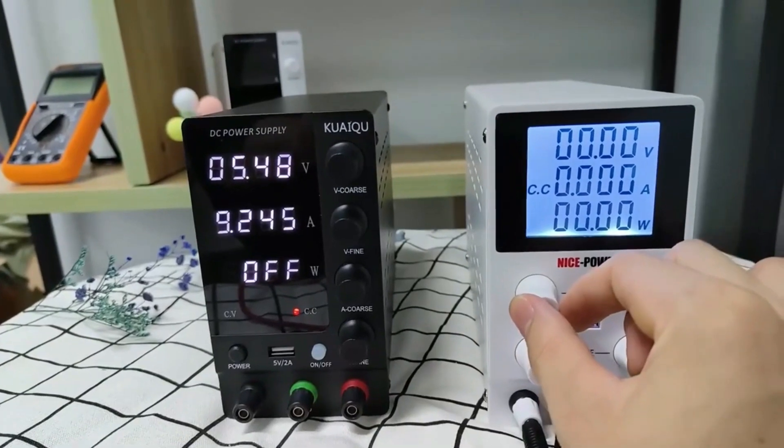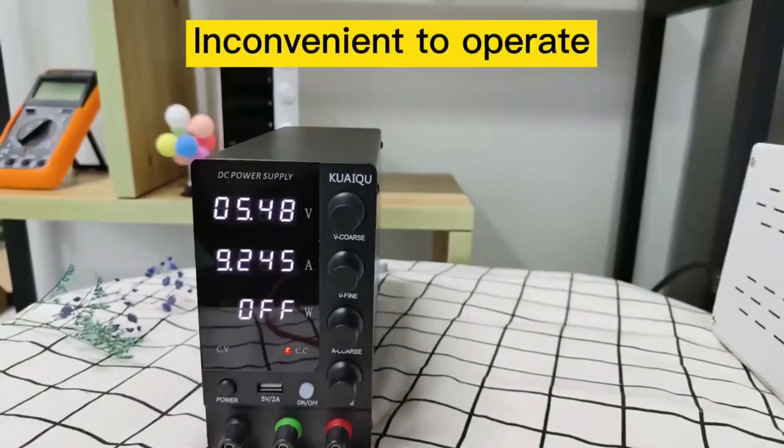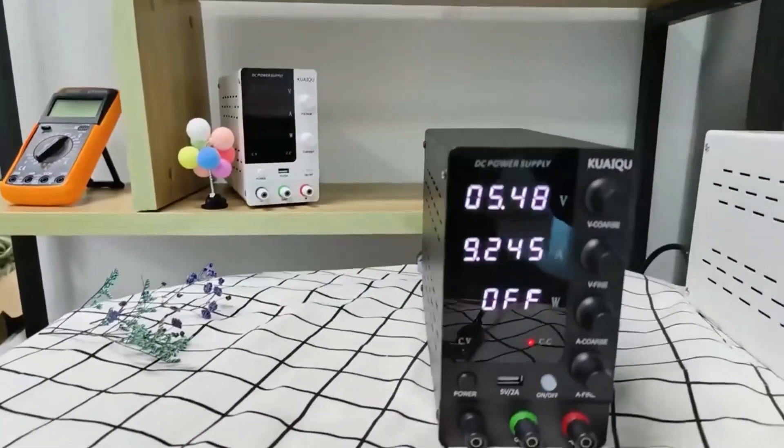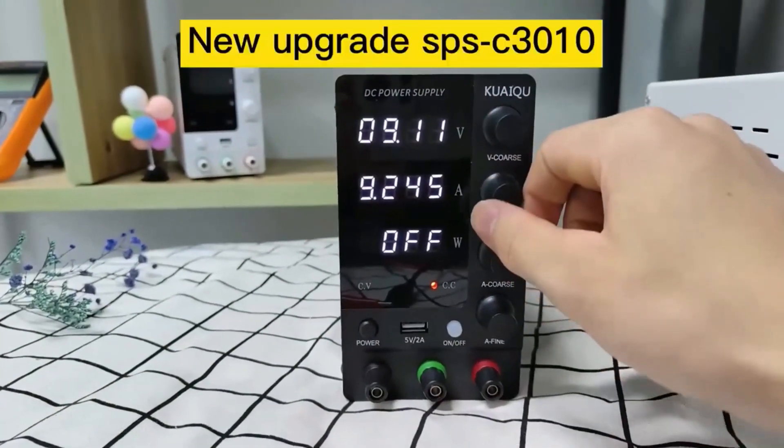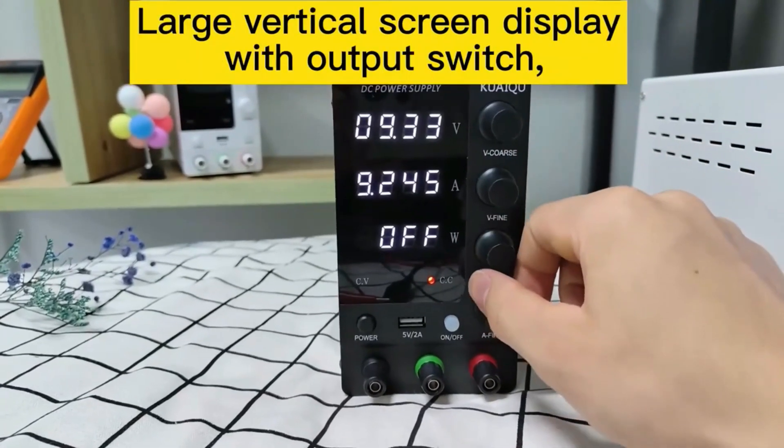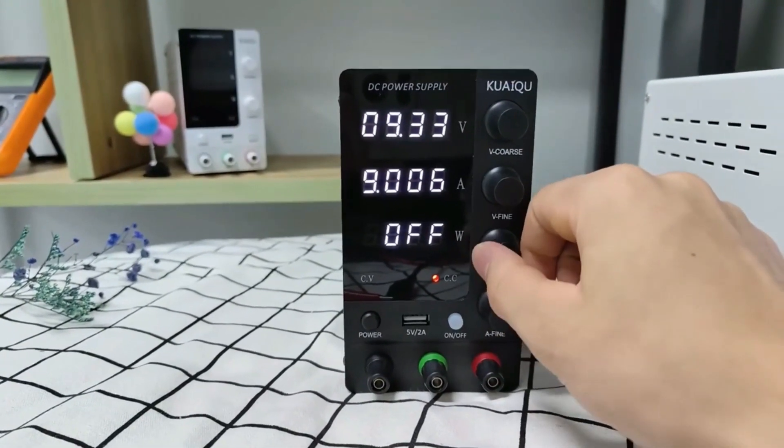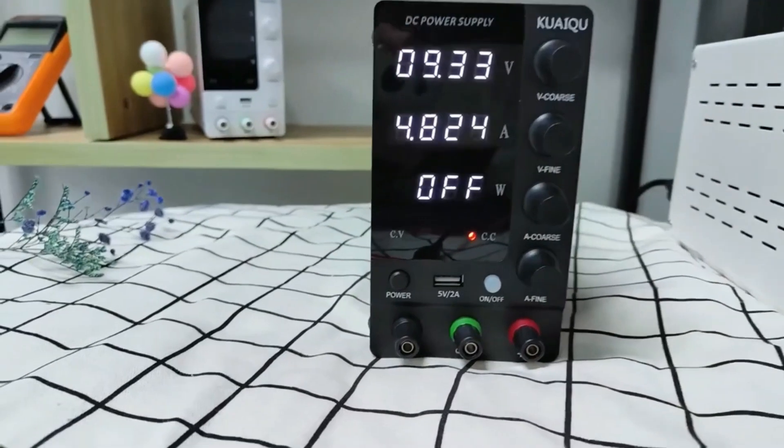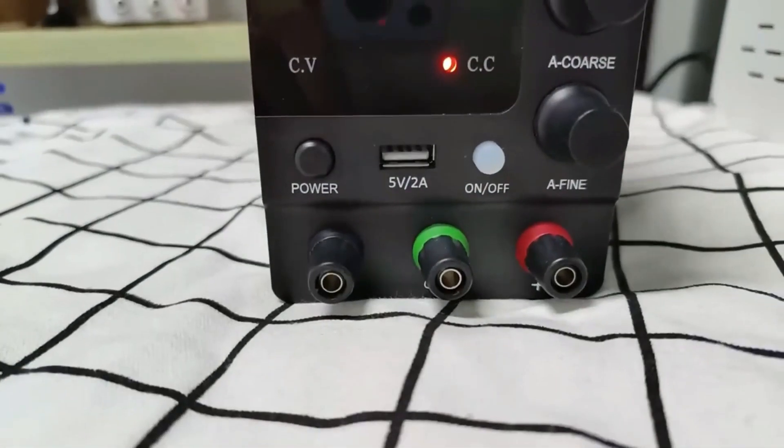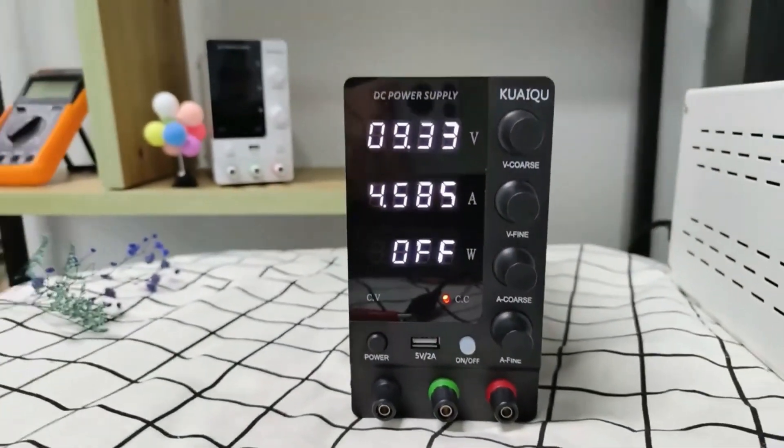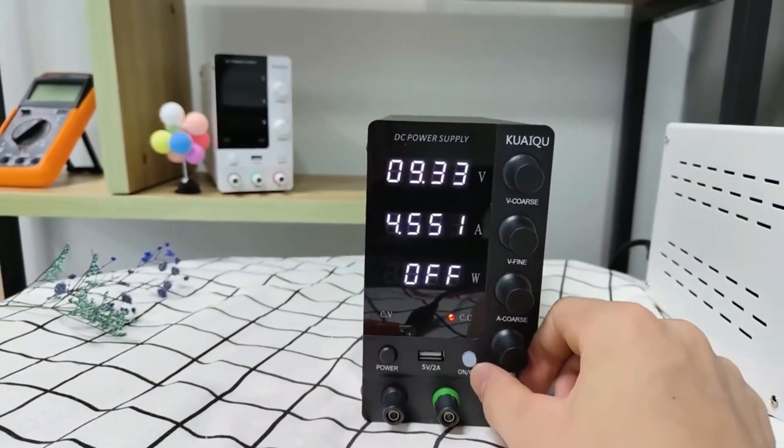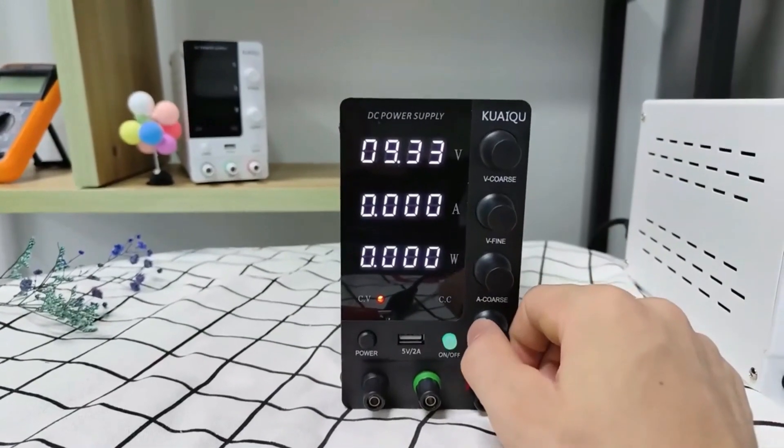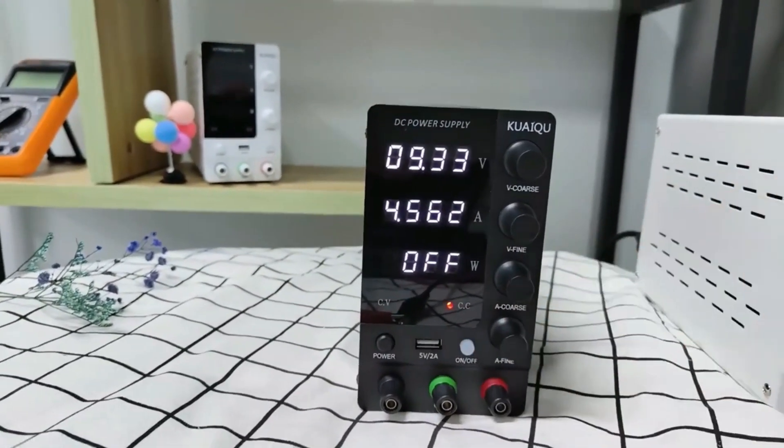The temperature coefficient of less than 100ppm per degree Celsius ensures stability and accuracy even in ambient temperature changes. The indicator meter displays output voltage and current readings with precision, within plus 0.5% of the reading plus two digits, allowing for accurate monitoring and adjustments. The compact and portable package dimensions make it easy to integrate into workspaces or carry.